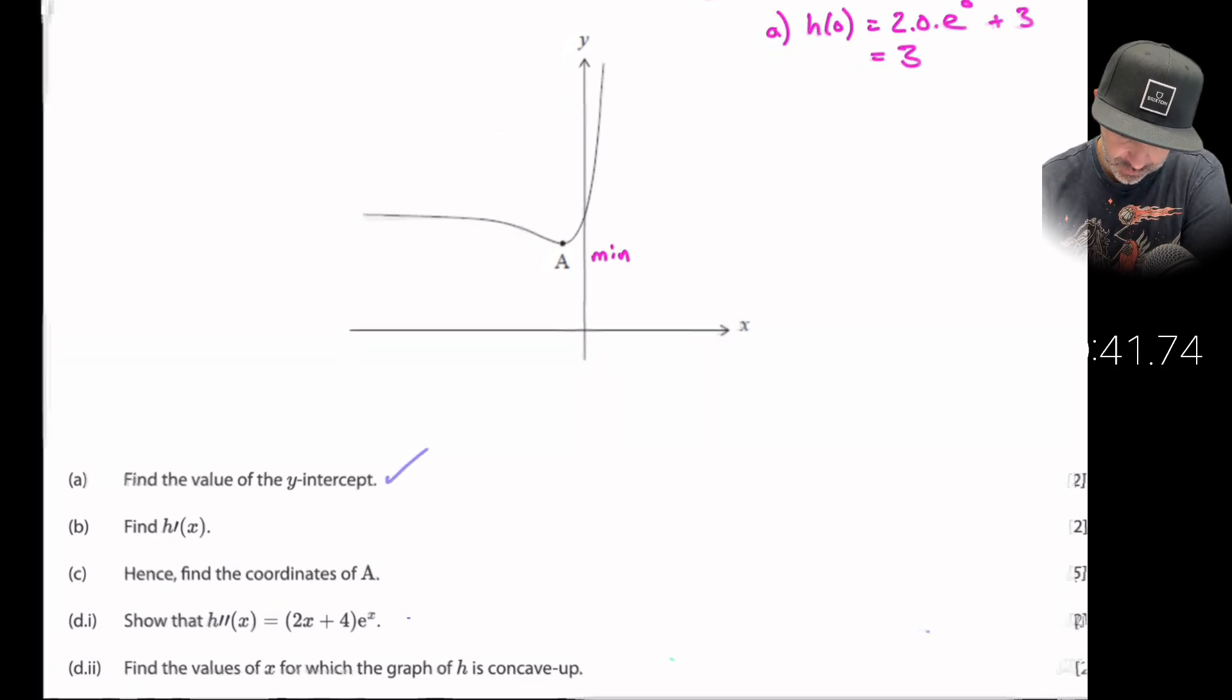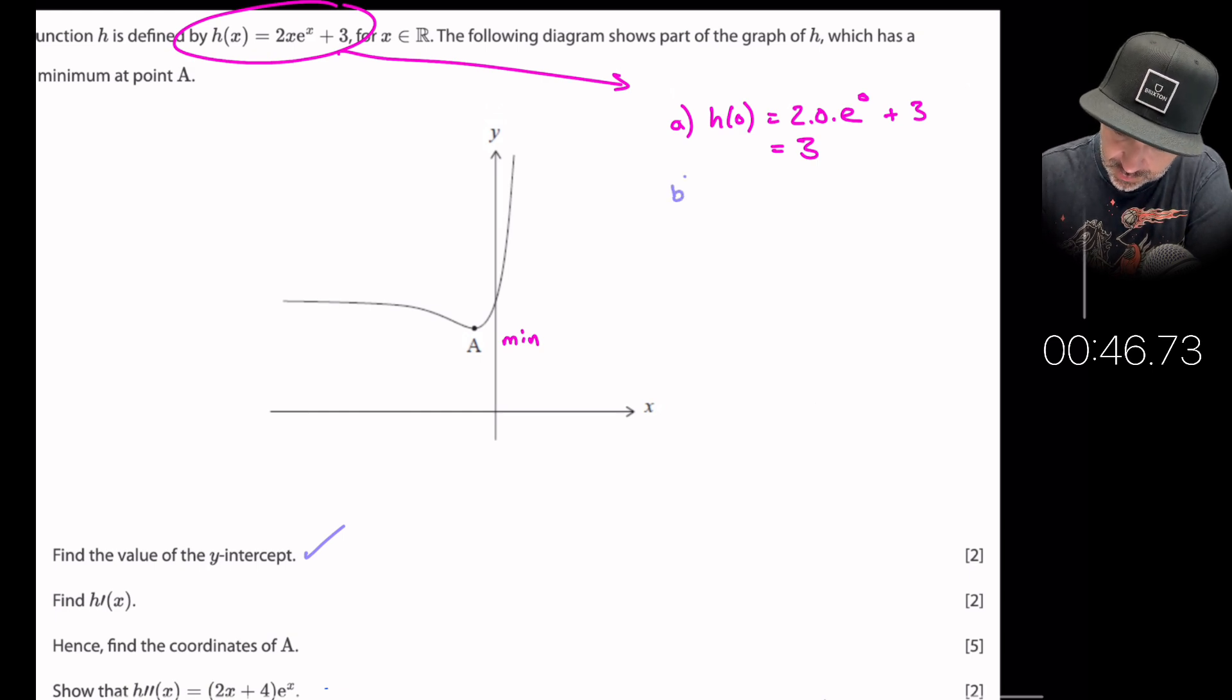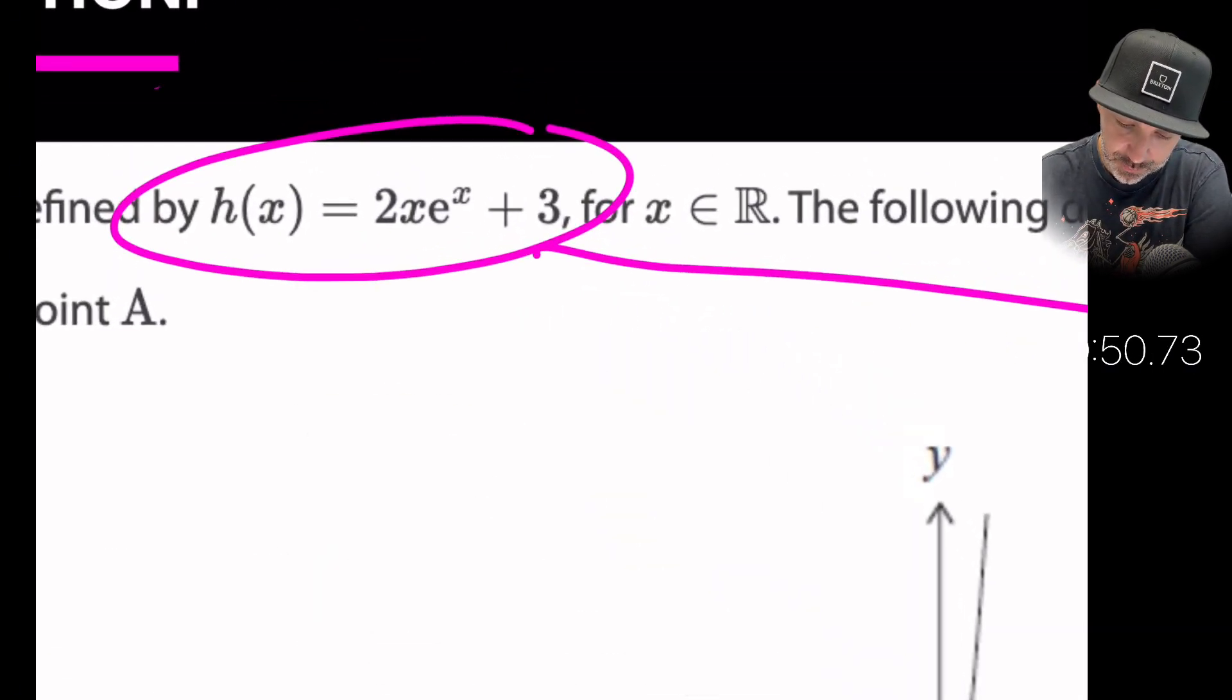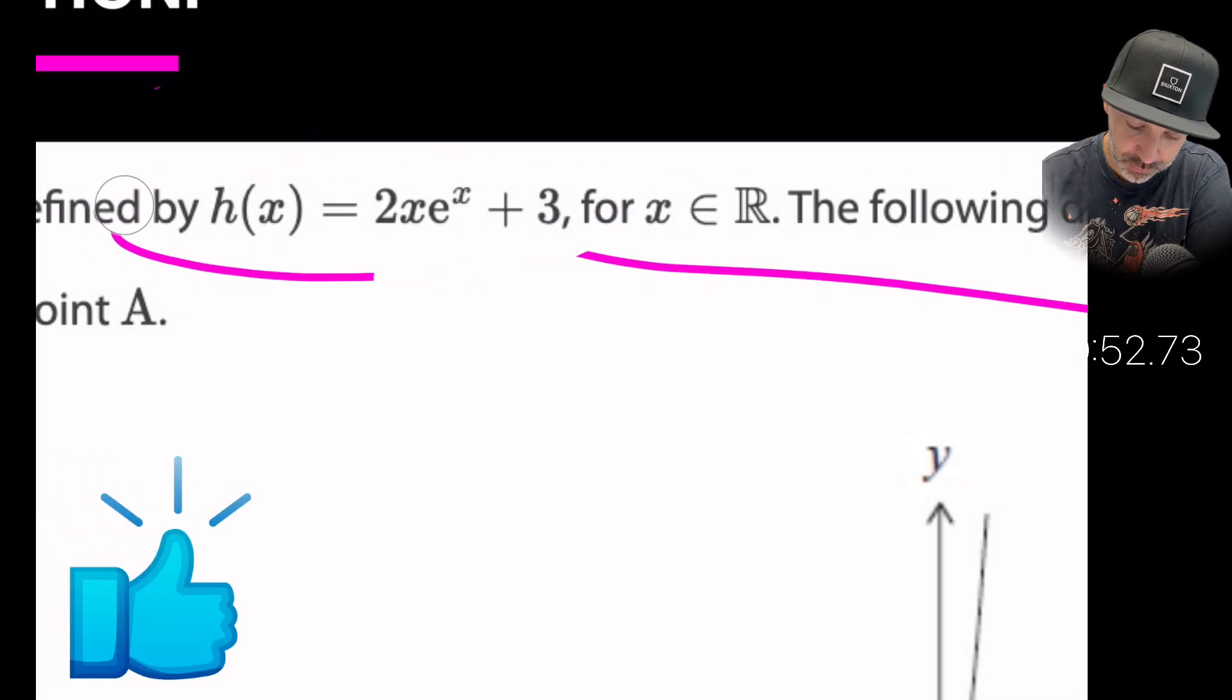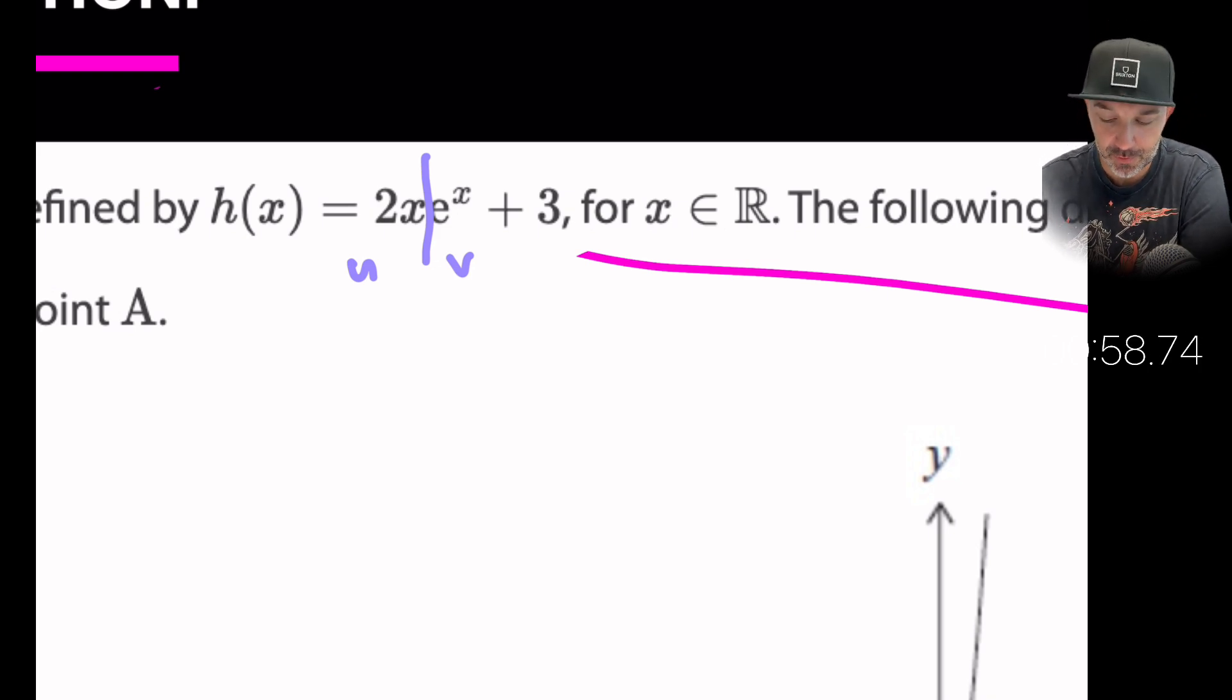Find the derivative h prime of x. So the derivative of this expression, well it's actually a product isn't it. So we're going to need to do product rule on this. Let's go ahead and split this down the middle here. So this is u, this is v. We don't need to worry about the three because when we differentiate three it will disappear.